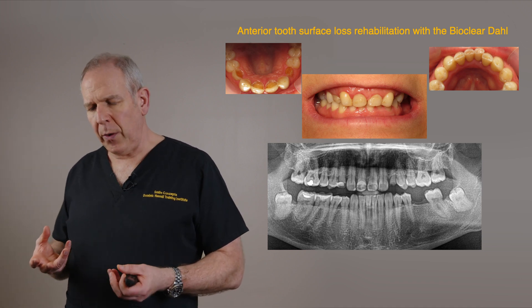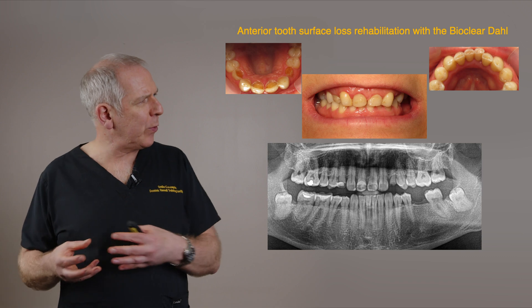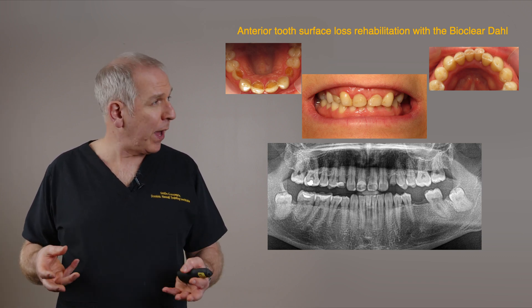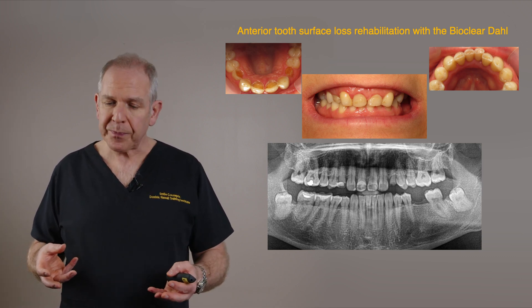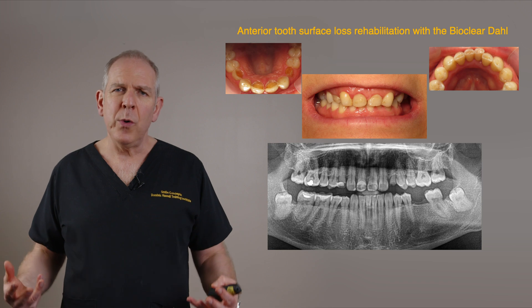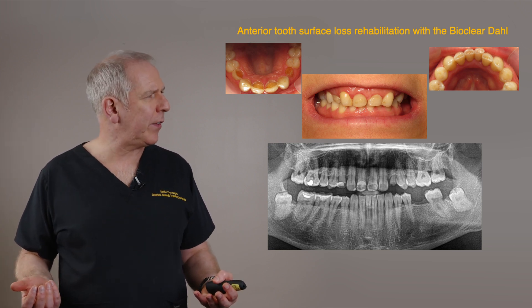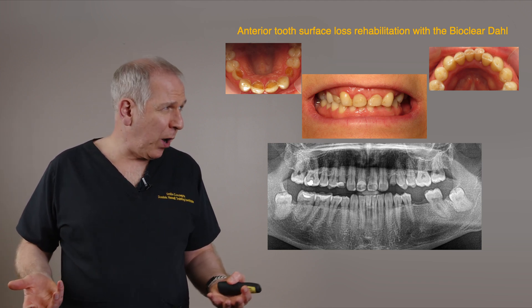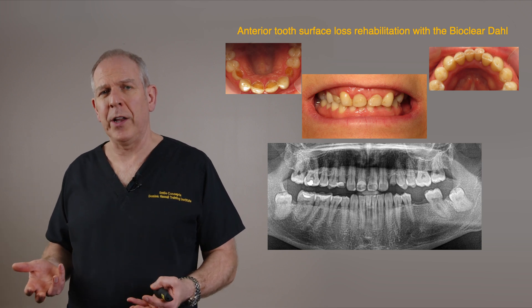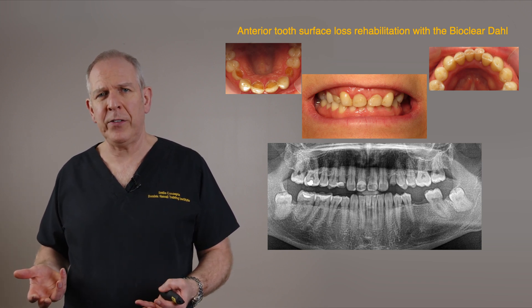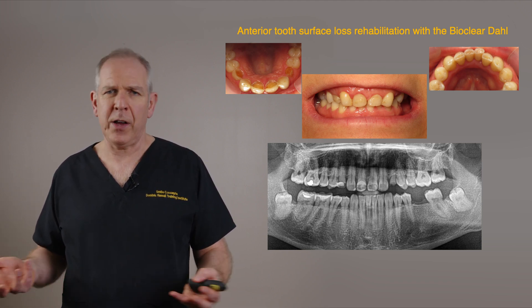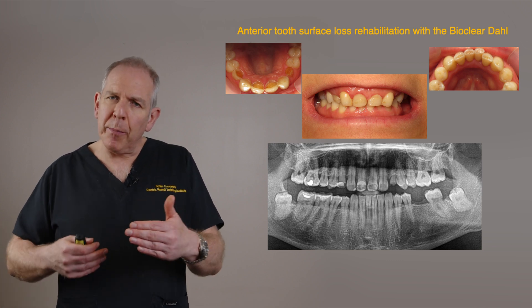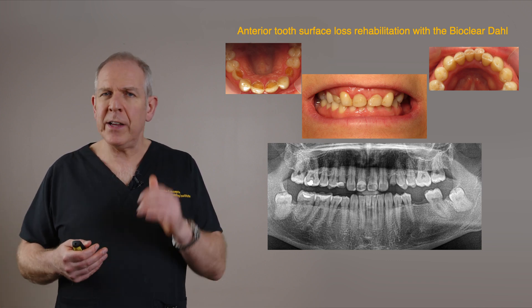So this case is going to show all three things. We're going to build up the front four teeth with Bioclear. We're going to use implants to replace what are basically going to be the canines but are currently the C's. And we're going to open up the OVD as well.